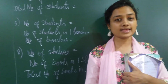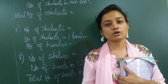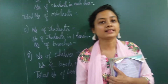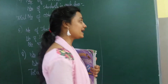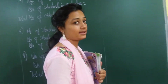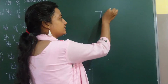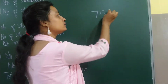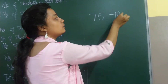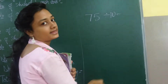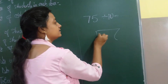Before going to 5.6, we have to learn division by 10. For example, I have the number 75 and I want to divide it by 10. Let me divide it with you.